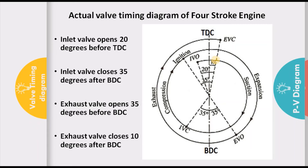During valve overlap, since both the inlet valve and the exhaust valve are simultaneously open, the fresh charge coming from the inlet manifold may pass out through the exhaust valve. This is a critical design consideration — engineers must ensure that this valve overlap period is kept to a minimum so that losses are minimized. This is the actual valve timing diagram, which differs from the theoretical cycle.